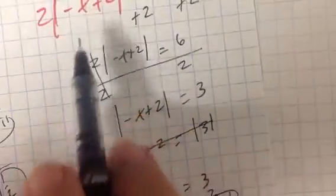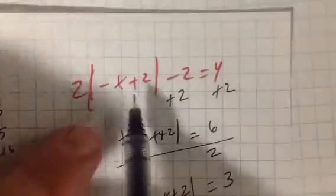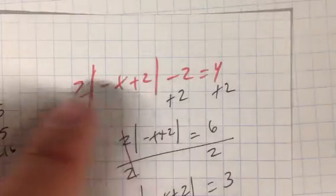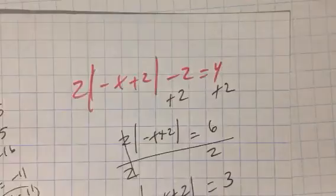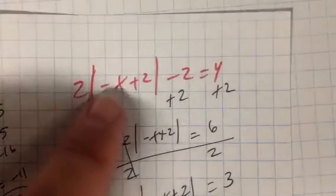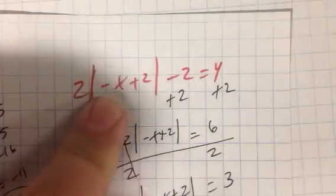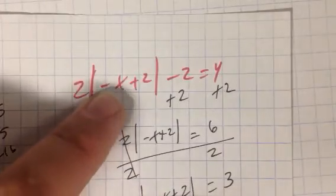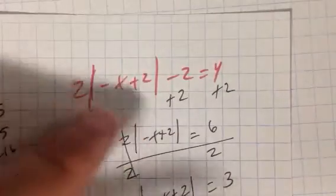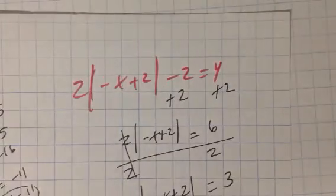And if you're not sure, plug them both in and see if they work. X equals negative 1. Plug it in there. Negative negative 1 is 1, plus 2 is 3. 2 times 3 is 6. 6 minus 2 is 4. Correct. Negative 1 works. What about 5? Negative 5 plus 2. What's negative 5 plus 2? Negative 3. Absolute value of negative 3 is 3. 2 times 3 is 6. 6 minus 2 is 4. That is true. So, those are both true.